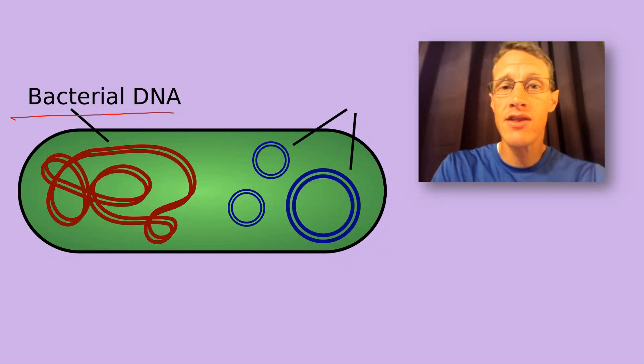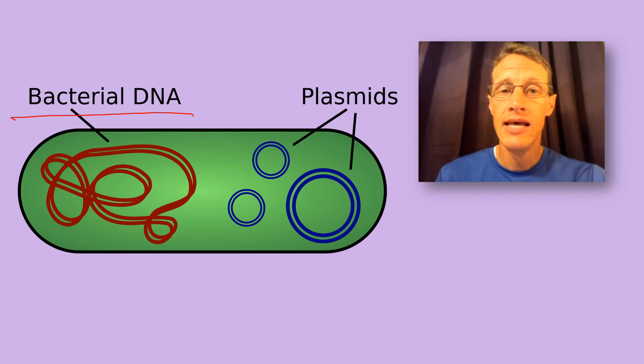In addition to the main chromosome that all bacteria have, many strains also contain small circular pieces of DNA called plasmids. And while plasmids aren't necessary for life, they often give bacteria enhanced capabilities.